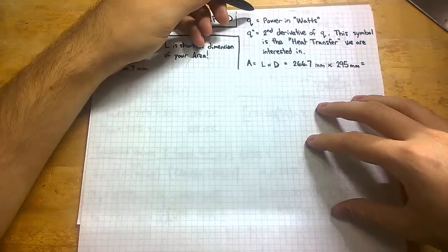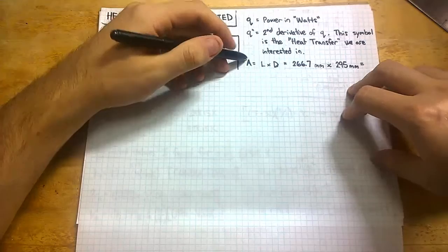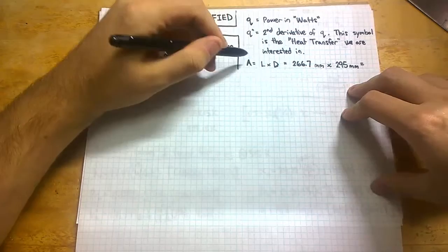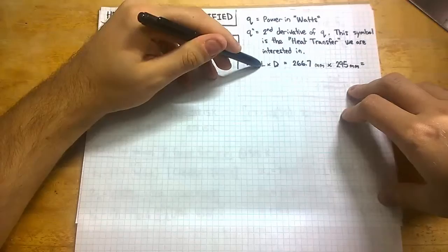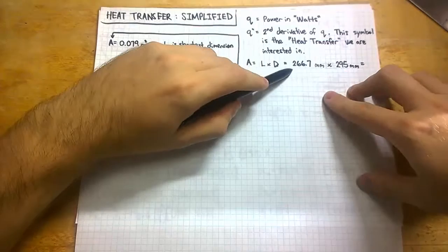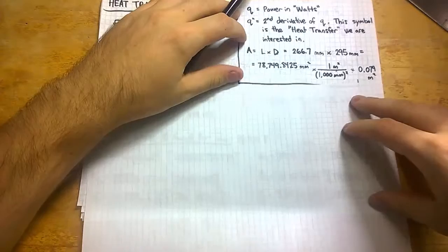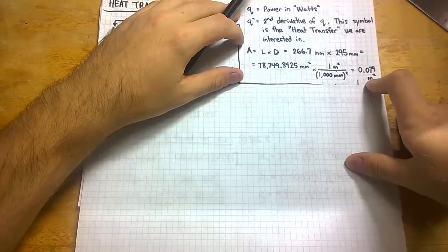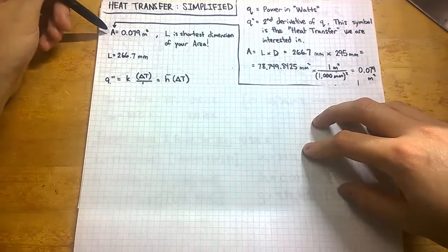Next we will look at area because we are going to be dealing with our heat bed area, which will be L by D. This L is actually the shortest dimension on that cross-sectional area, and that's critical because we will use L later. However, we won't use D unless we're calculating the area. So L in this case is 266.7 millimeters. We get an area of 0.079 meters squared, and it's critical that we have it in meters because we are going to be doing all of this example in metric.